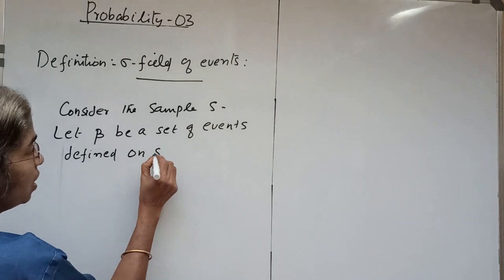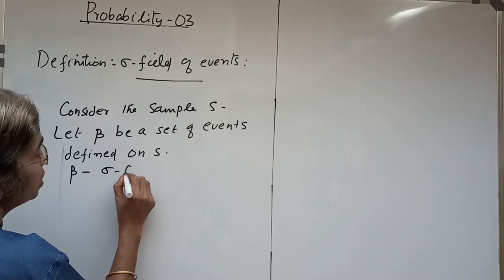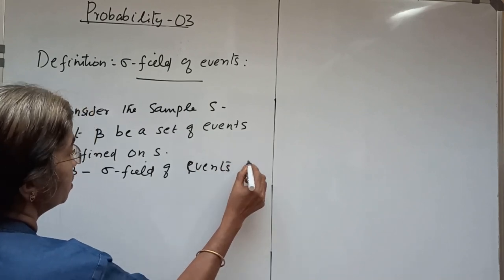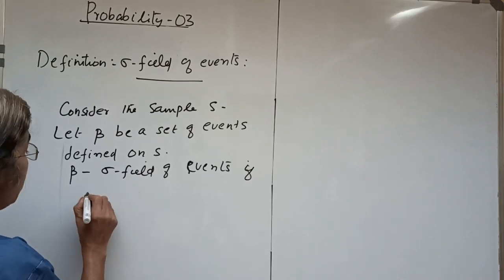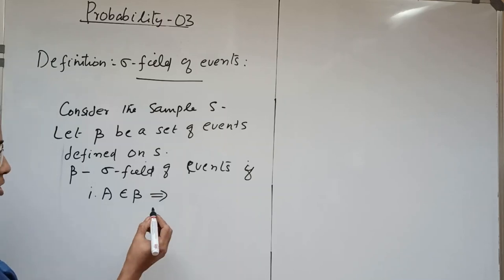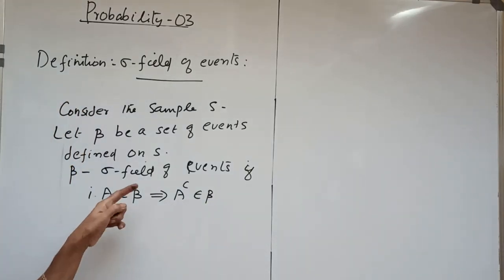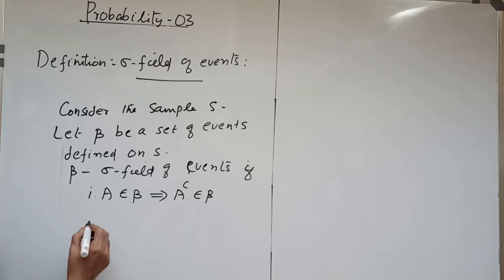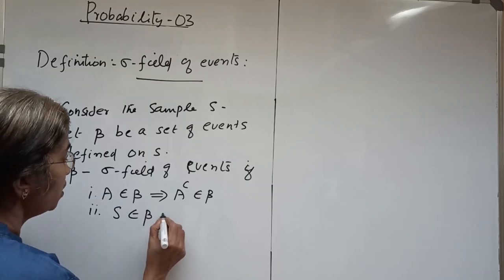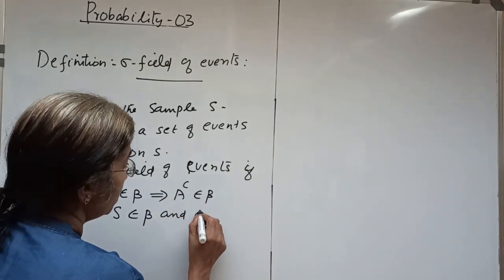Beta is called a sigma field of events if three conditions are satisfied. First, if A belongs to beta, then its complement should also be in beta — for any event A in beta, its complement belongs to beta. Second, S belongs to beta and phi, the null set, belongs to beta.